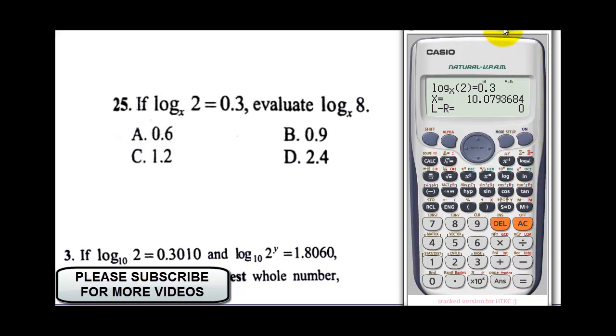What we will now do is we will now evaluate log 10.078. So let's now say log, okay, sorry, that's log 10.078. That'll give us our final answer at 0.9. So that means number 25, our final answer here, it's going to be B.